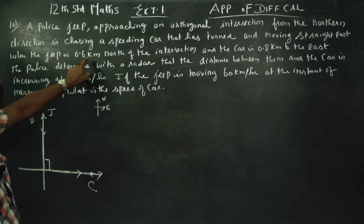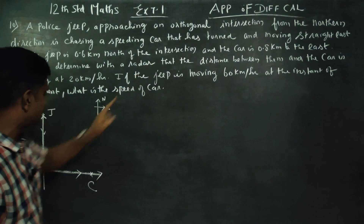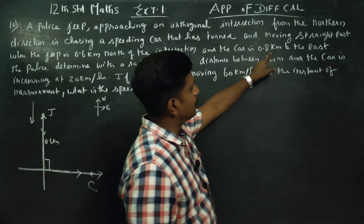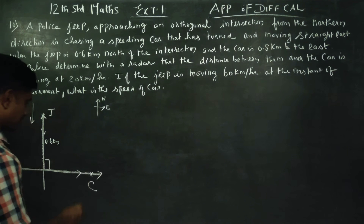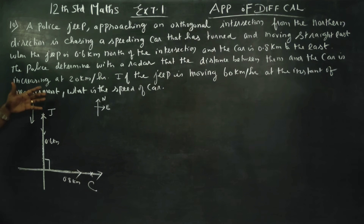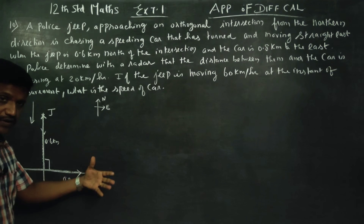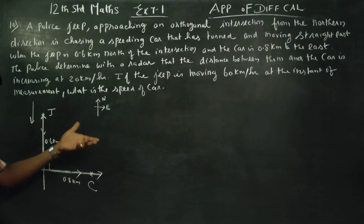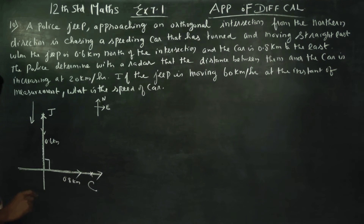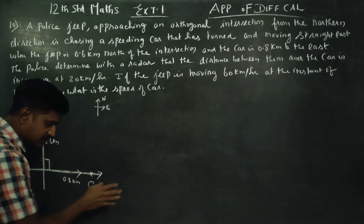The car is positioned to the east of the intersection. The distance is 0.8 km to the east.